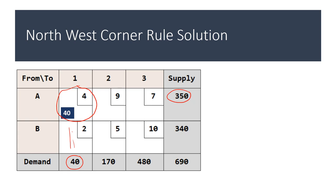Then you go to the right and allocate as much as possible. You allocate 170 there, meaning that the second column is now full. Then you go to the next cell and allocate as much as possible, making sure the total equals 350. So you allocate 840, adding to 170 and 40 so the total becomes 150. Then the last step is allocating 340 in cell P23 so that the total is 480. That's the allocation for the north-west corner rule.